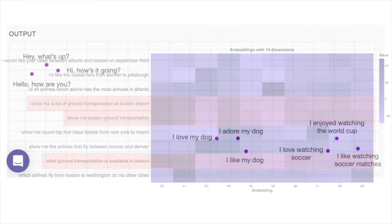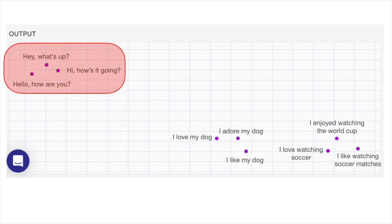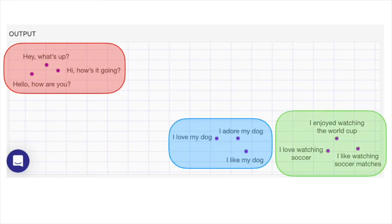Here is another example of the embedding. This one gives only two numbers per sentence, but it's actually a simplification of the big embedding. Notice there are three groups: one group is greetings, one talks about liking your dog, and one talks about soccer. This is a simplification because the full embedding gives 4096 numbers per sentence, reduced to two here in order to plot them in the plane. In the full 4096-dimensional space, similar phrases are close to each other.